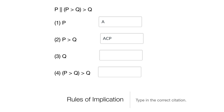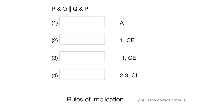For conditional proof, we assume the antecedent and then infer the consequent. The consequent here is Q. We get Q by using lines one and two with modus ponens. Then from that we infer the whole conditional — the first number cited is where we assumed the antecedent, the second is where we inferred the consequent, and from that we conclude the conditional using CP.